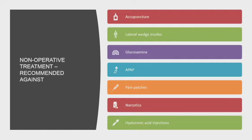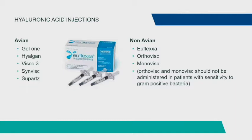Hyaluronic acid injections are a little controversial. There are two basic types: avian and non-avian. The avian ones really shouldn't be given to anyone with a chicken or egg allergy — you can get a pseudoseptic reaction where the knee becomes hugely inflamed and swollen, often requiring arthroscopy to drain. For anyone questionable, stick with the non-avian brand. Monovisc and Orthovisc also have a weird reaction related to sensitivities to gram-positive bacteria.